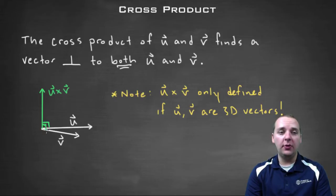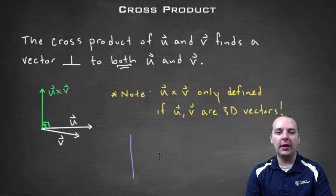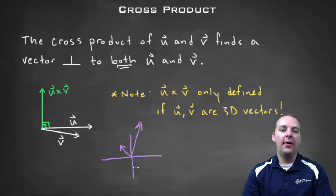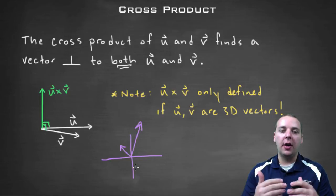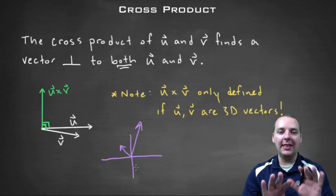Now one result of this that's pretty immediate is that this wouldn't make sense in just two dimensions. If you think about it, if you just had an x and y axis and your vectors were just in two dimensions like this, it would be impossible to always have a vector that's orthogonal to both of them in that plane.